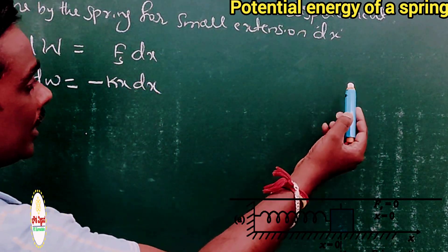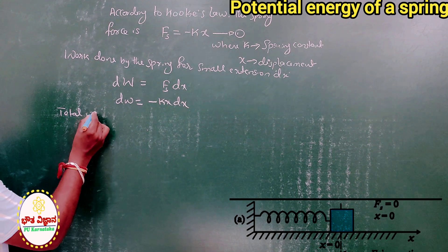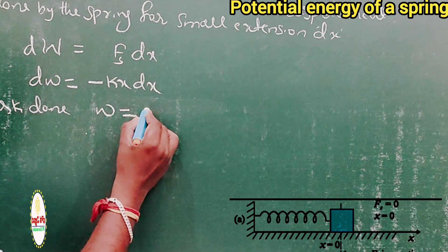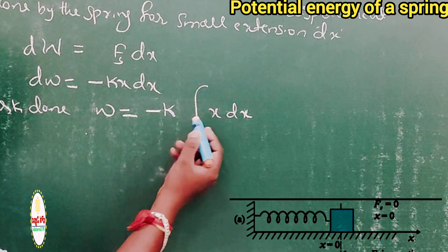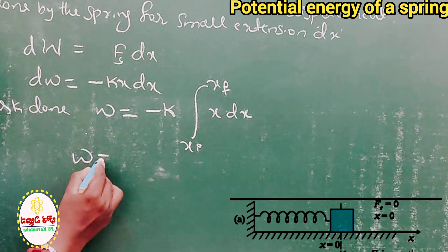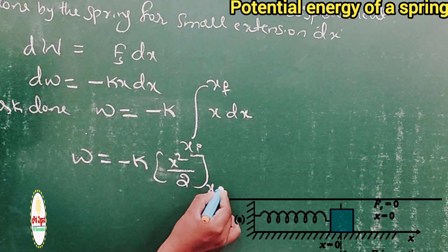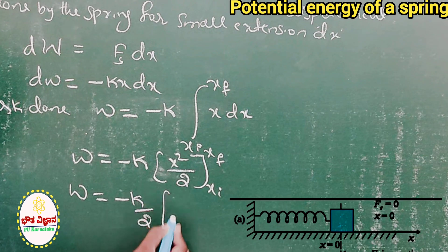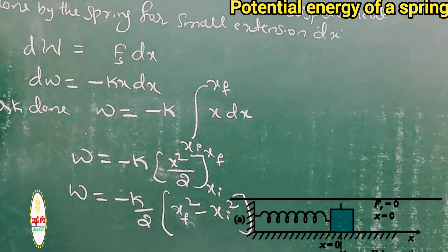For the total work done to extend the spring from initial position to final position, we integrate: W = −K times the integral of x dx. Integrating with limits from initial to final position gives: W = −(K/2)(xf² − xi²). This is the total work done.